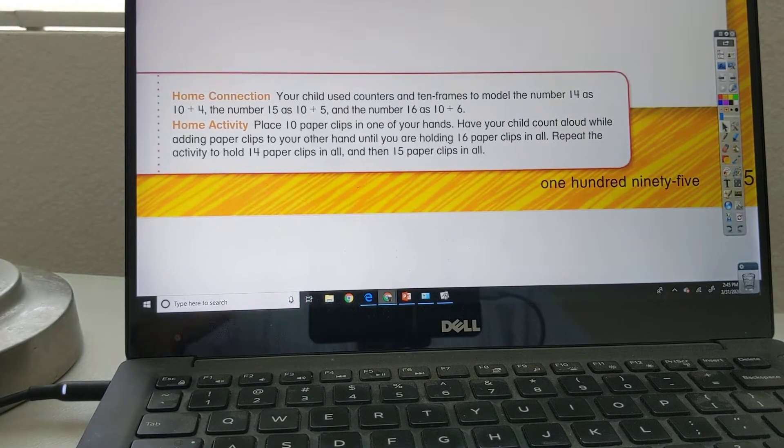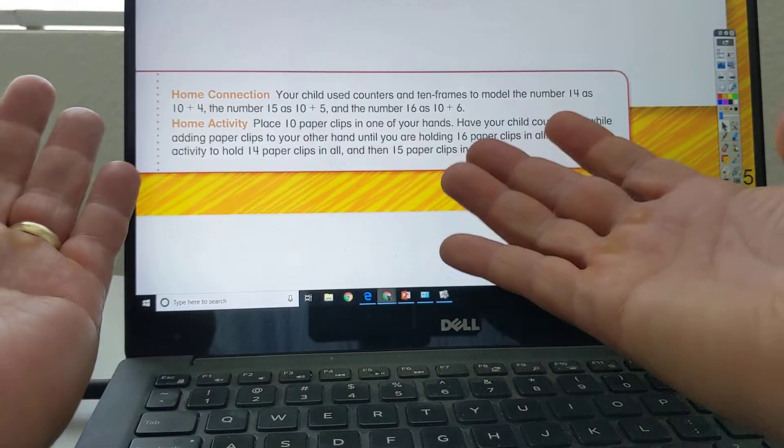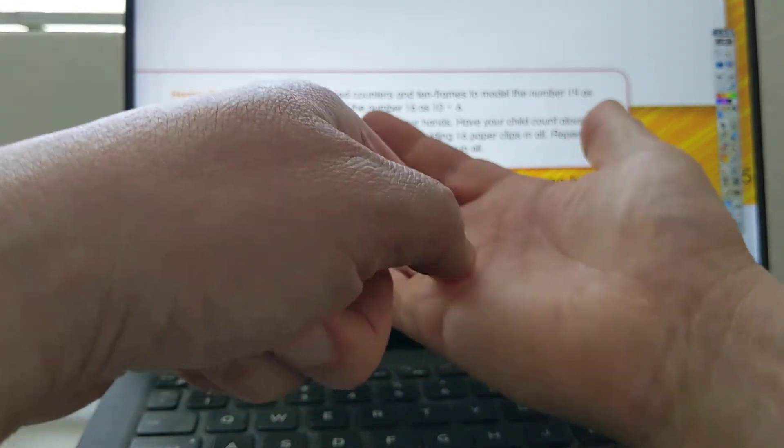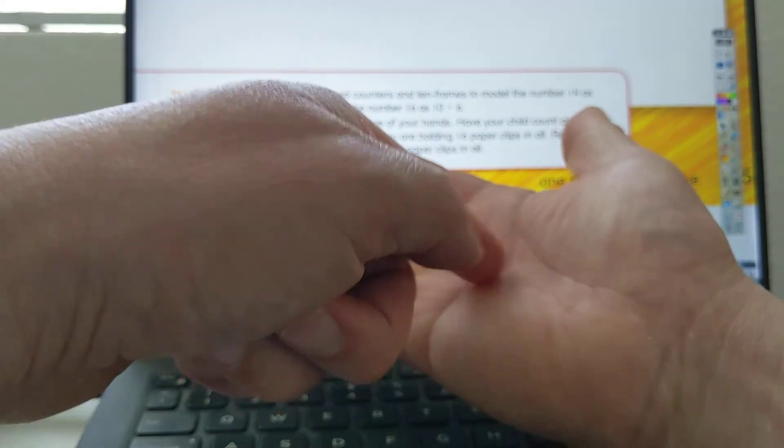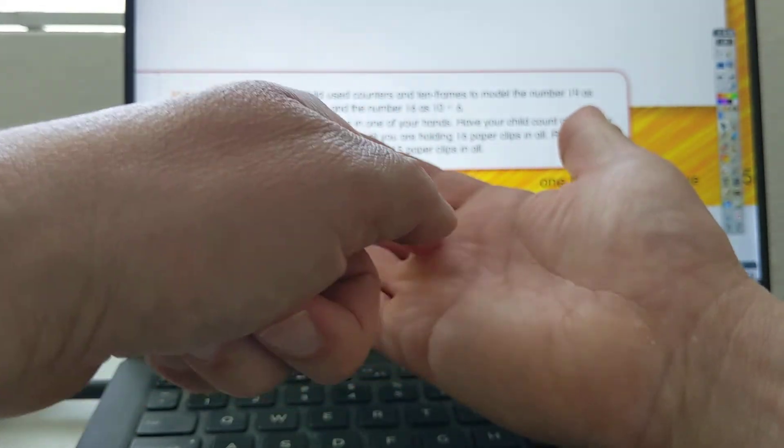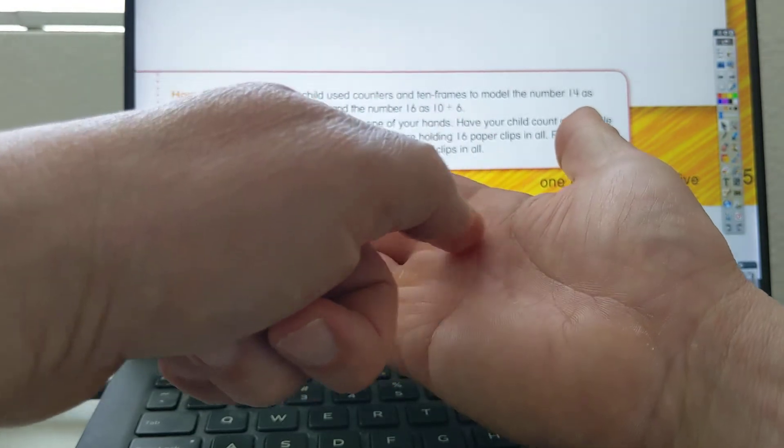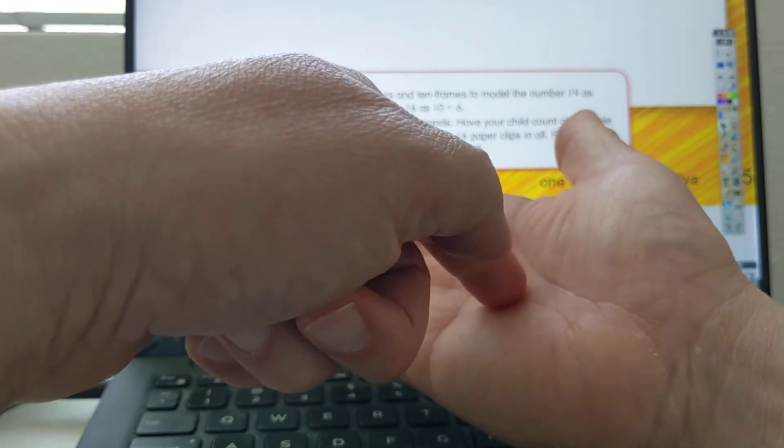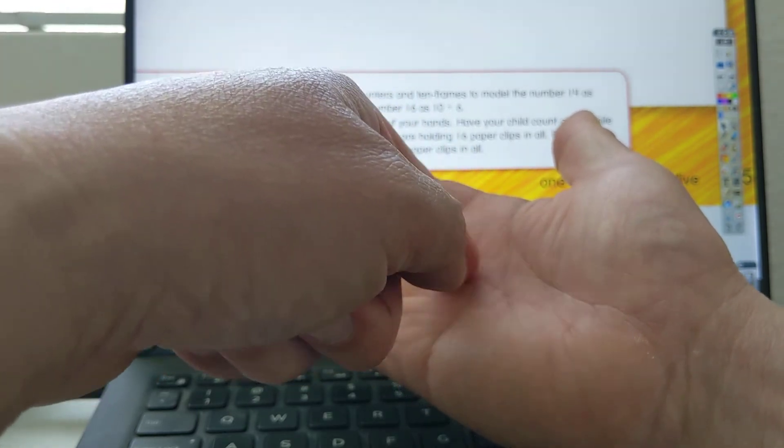So basically, you're going to have 10 paper clips here, 10 of them, 10 kind of items. It doesn't have to be paper clips. It could be rocks, 10 rocks. It could be 10 pieces of hair. It could be 10 pieces of something, little bits, pieces of paper.